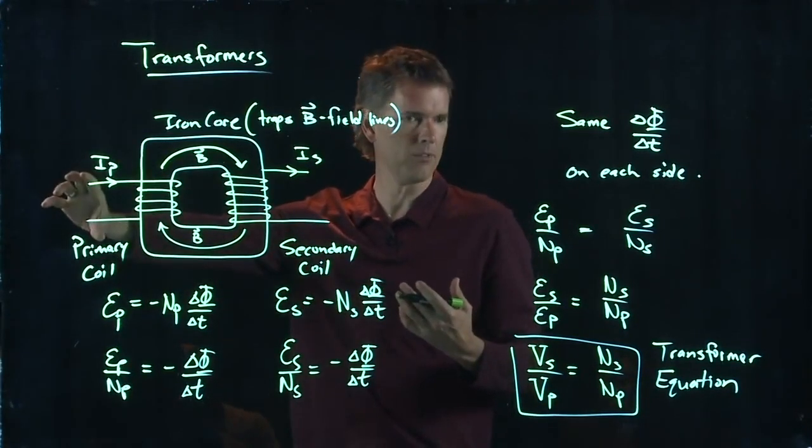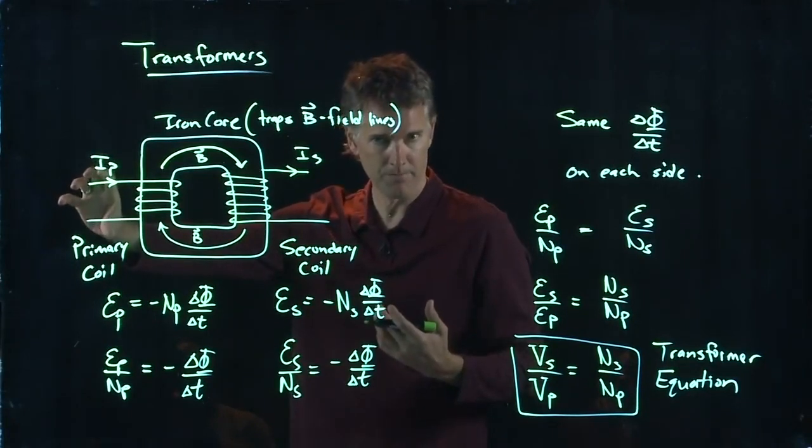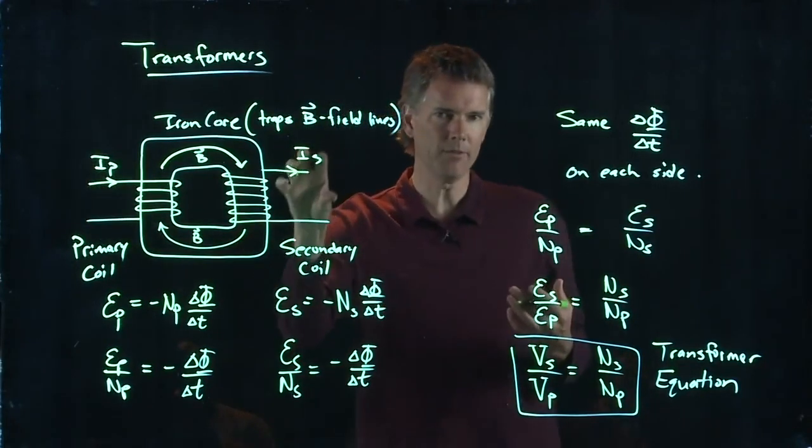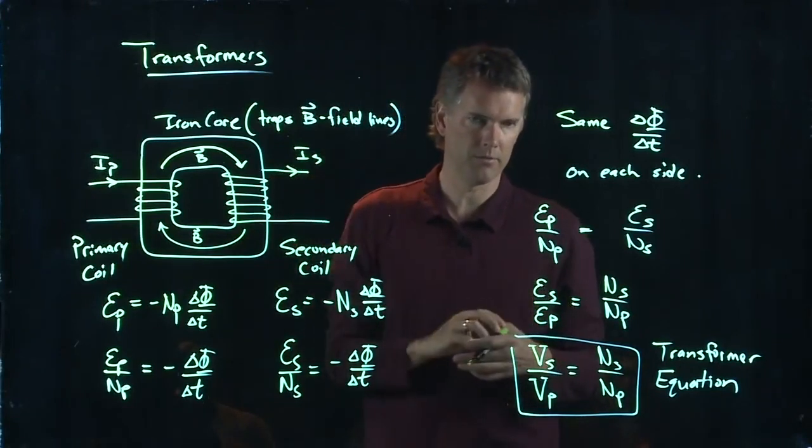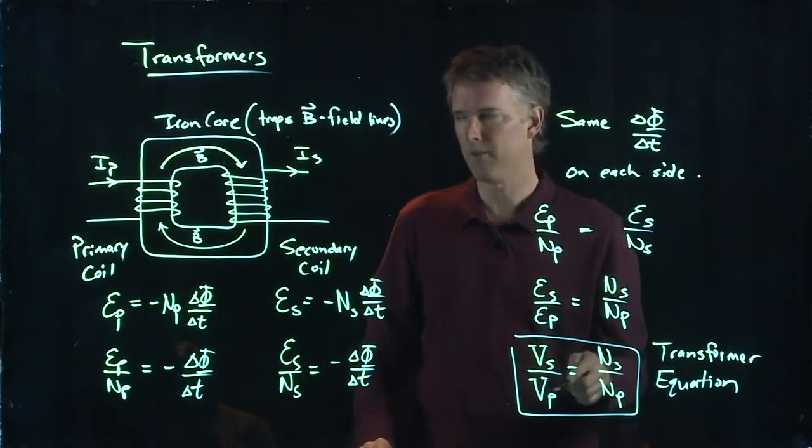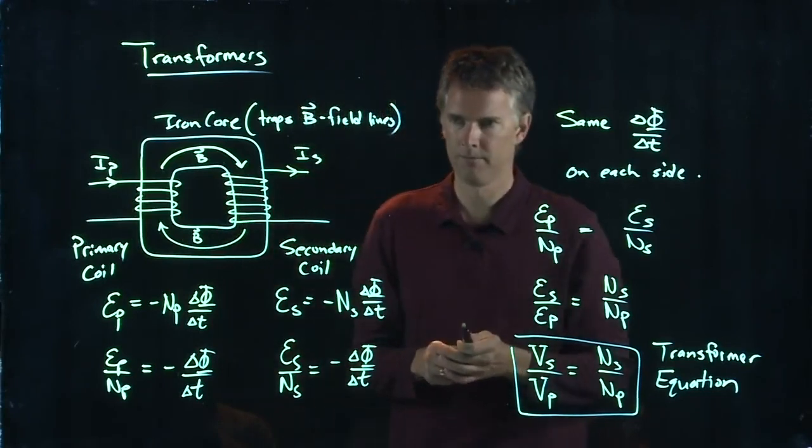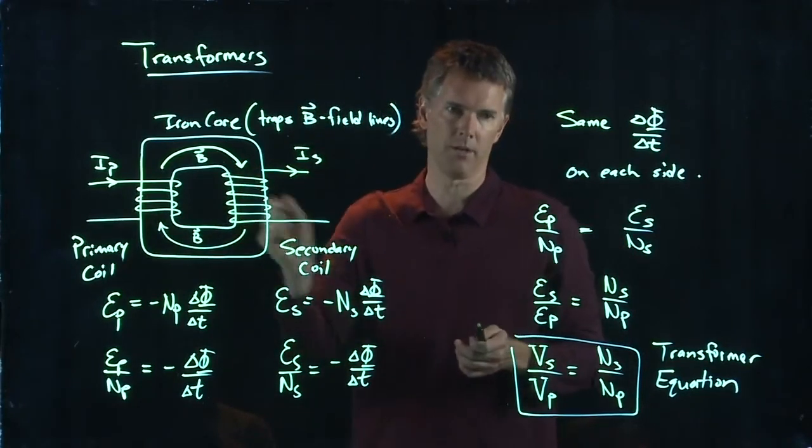Typically you call V sub P the primary. So by putting a voltage on this side of the transformer, I can get a totally different voltage on the other side of the transformer. And all it depends on is how many coils. Now, if I have the same number of coils, then I don't change the voltage. That's called a one-to-one transformer.